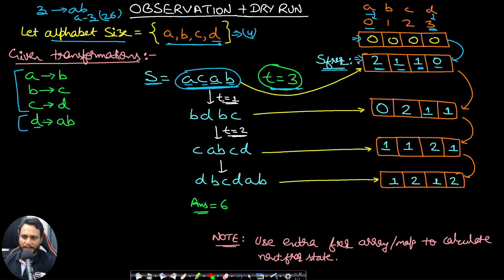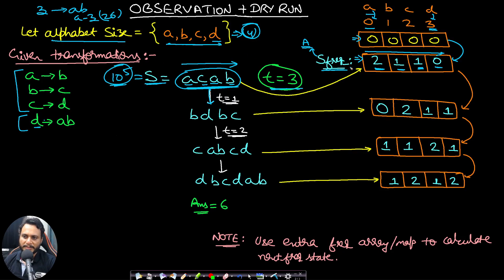Instead of applying transformations on the entire string s, we apply them on the frequency array. The frequency array never exceeds the alphabet size — maximum 26. So even if the string size is 10^5, the frequency size stays at 26. Doing t iterations over a 26-size array gives 2.6 × 10^6 operations, well within 10^8, and it will pass within one second.